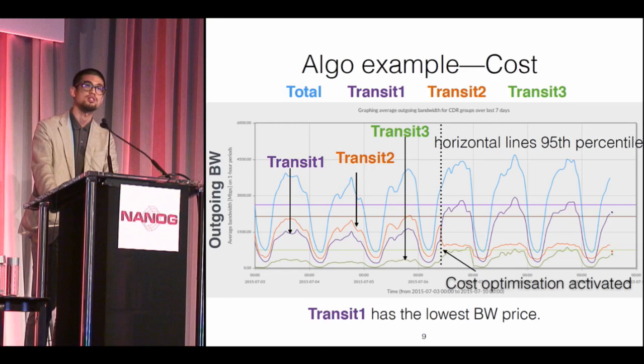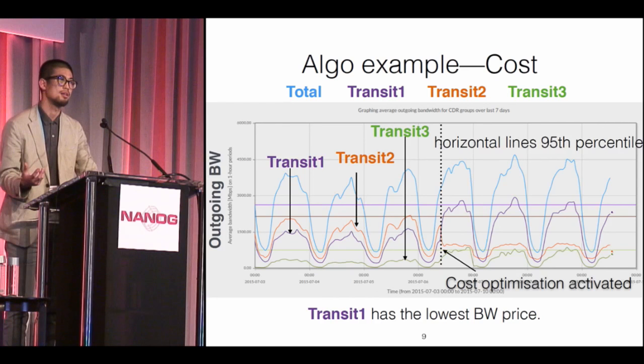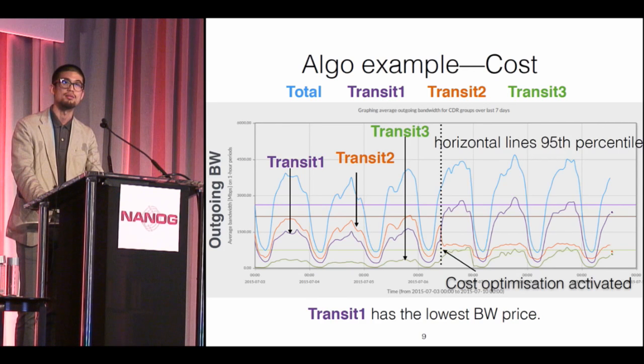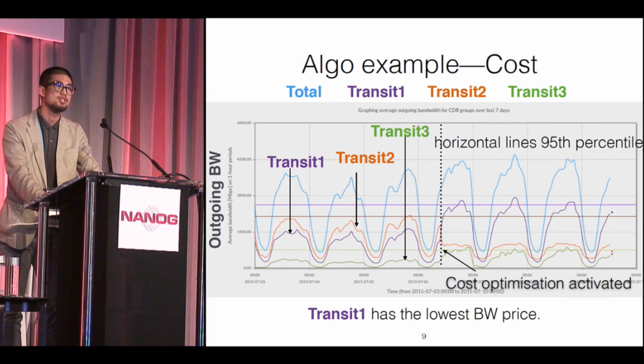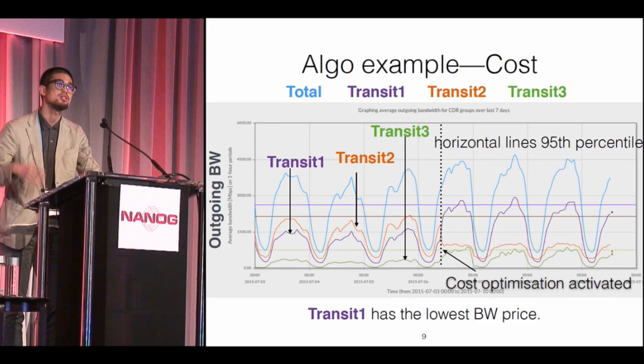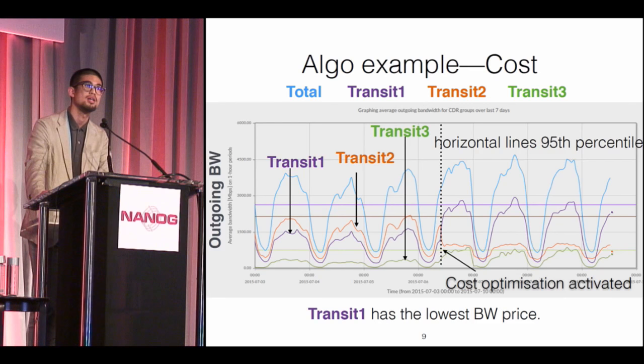First, let me quickly reveal how we calculate transit cost. There are two parameters involved: the 95th percentile of bandwidth and, oftentimes, the committed data rate, the CDR. As long as the 95th percentile rate doesn't exceed the CDR rate, we possibly have a flat rate — a fixed cost no matter how much you use. In this case, we have incentive to maximize utilization and push as close as possible to the CDR rate. Once we exceed it, extra fees are generated, linear to the exceeded portion of bandwidth.